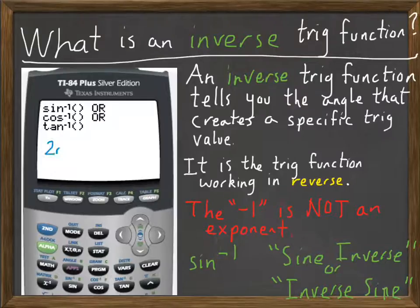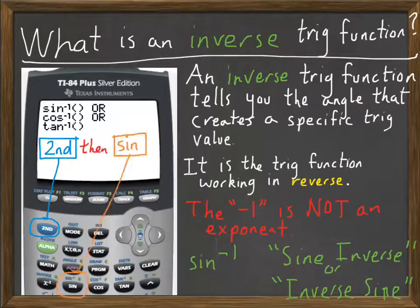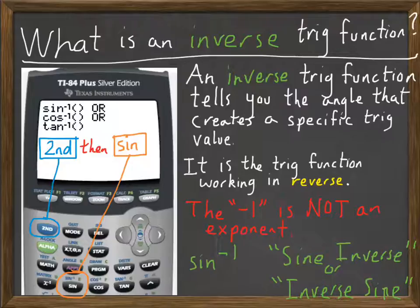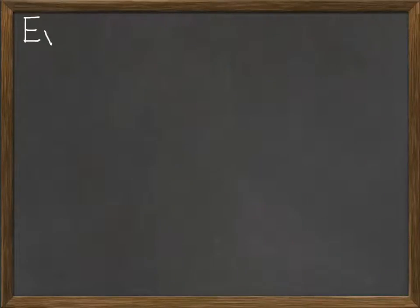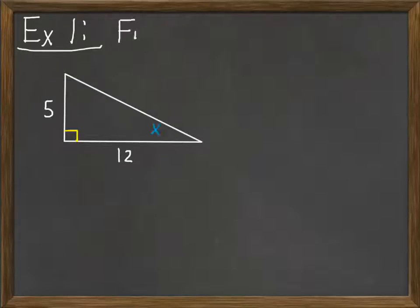You get these functions by using the second button on your TI calculator, then pushing the sine button, or second then cosine, or second then tangent. So these inverse functions will undo the working of the other trig function. Let me show you. It'll make more sense when you apply it to the example. So here's our example that we already had.